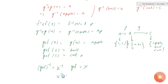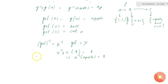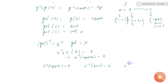So x⁻¹(x(1)) = 1, and since x(1) = apple, that means x⁻¹(apple) = 1. Therefore x⁻¹, which is (g∘f)⁻¹, is defined as: (g∘f)⁻¹(apple) = 1, (g∘f)⁻¹(ball) = 2, and (g∘f)⁻¹(cat) = 3.